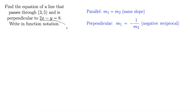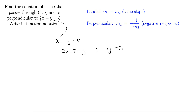We have 2x minus y equals 8. We can find the slope of that by solving for y. So I'm going to add y to both sides and subtract 8 from both sides. This gives us 2x minus 8 equals y, which is really y equals 2x minus 8, which is in the form y equals mx plus b. Thus we can see that our slope is 2.